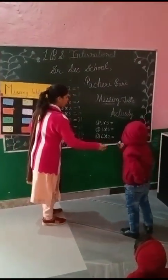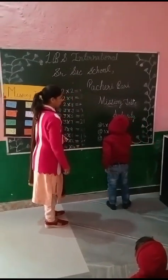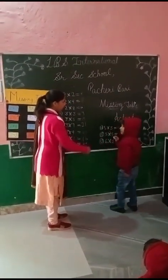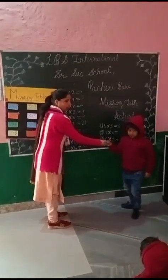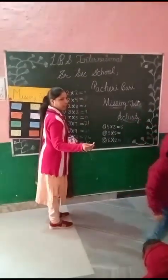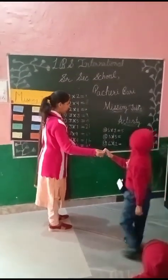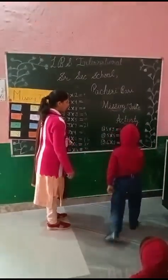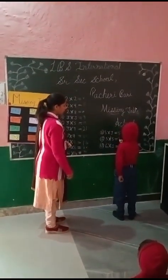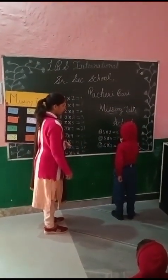Five multiply ten. Very good. Right. Come here. 5 multiply 5. Right.